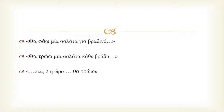To summarize: the simple future is used for an action that will happen once at one given time in the future, while the continuous future is used either for a repetitive or an ongoing action in the future.